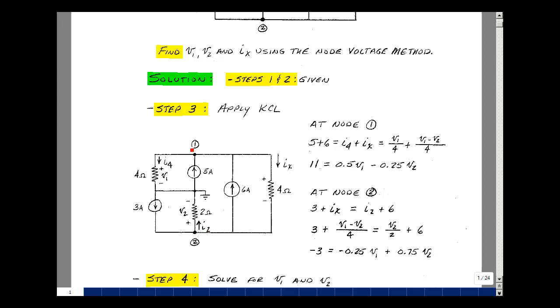To Kirchhoff's current law, node 1, current that enters equals the current that leaves. 5 amps is entering, 6 amps is entering, so that's 11. What's leaving is I4 and I sub x. But I4 is the voltage across the 4 ohm resistor, which is going to be this node voltage minus this node voltage, V1 minus 0, or just V1, divided by 4.